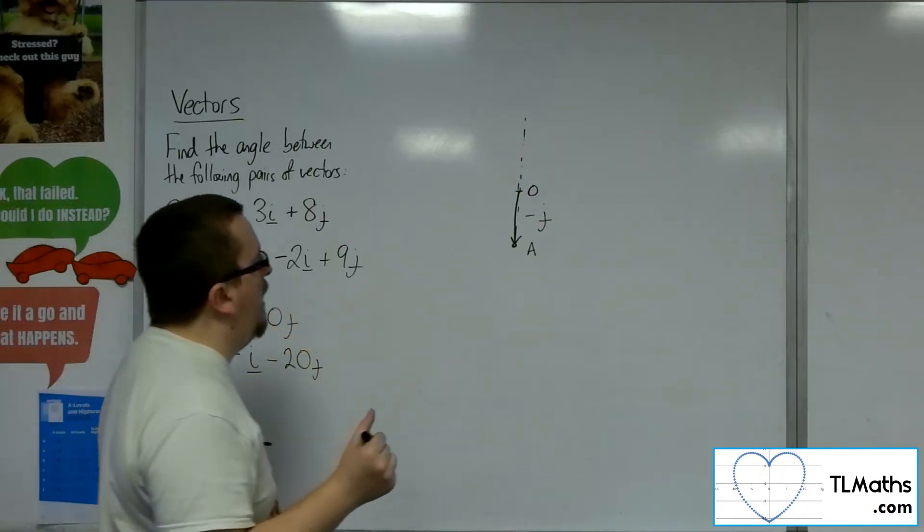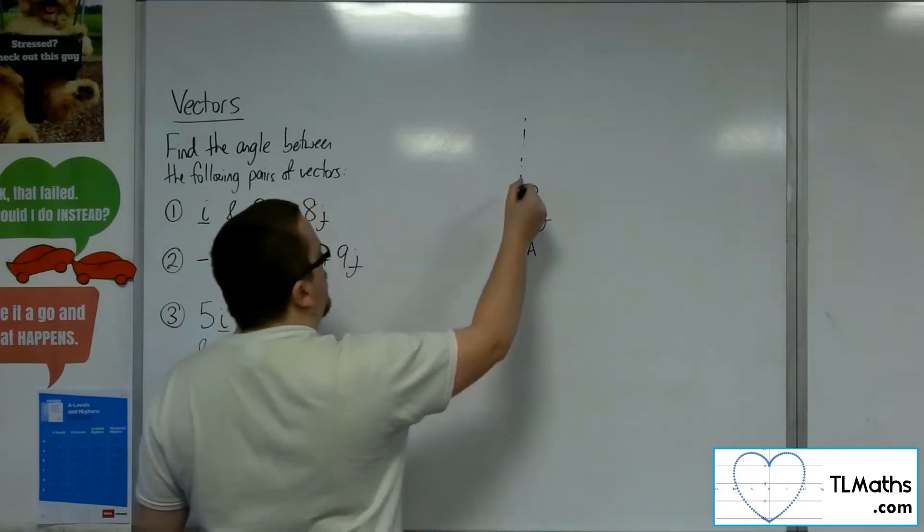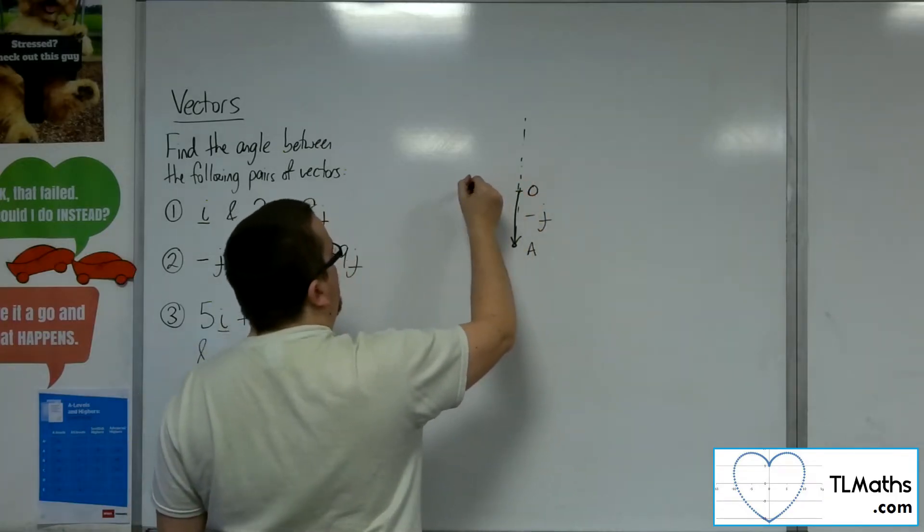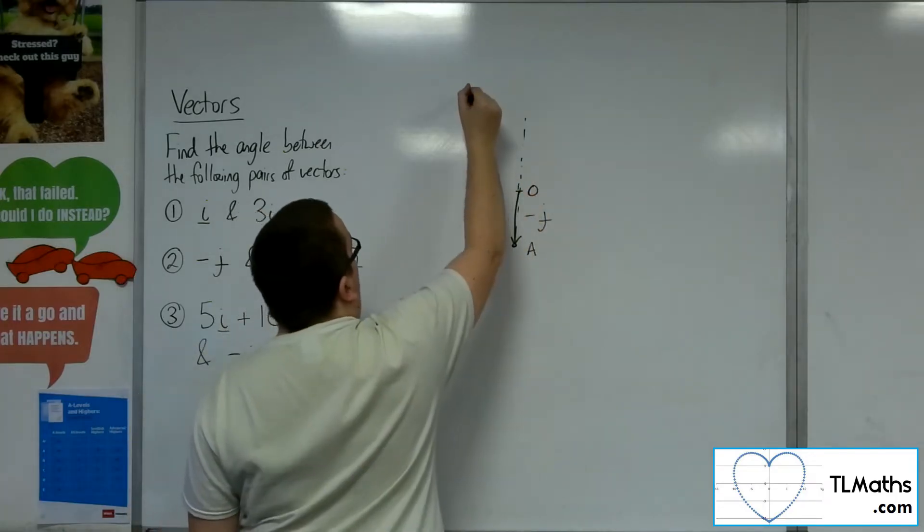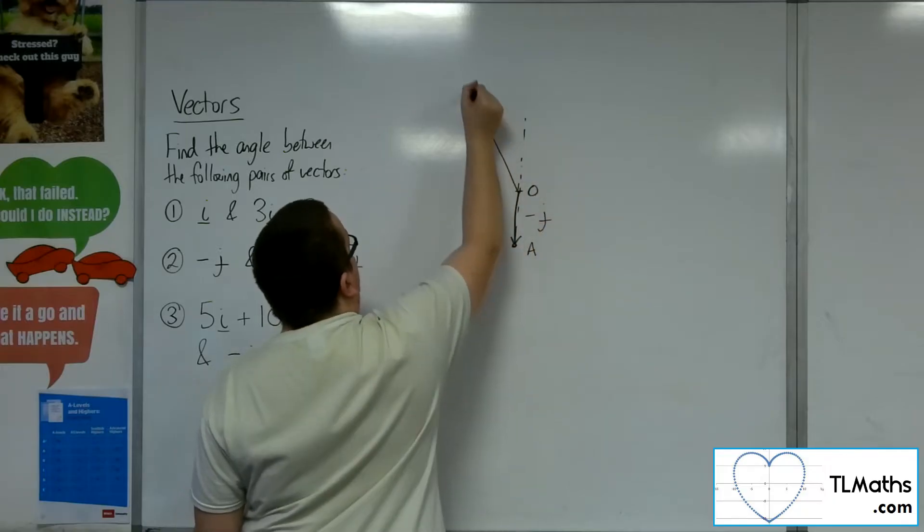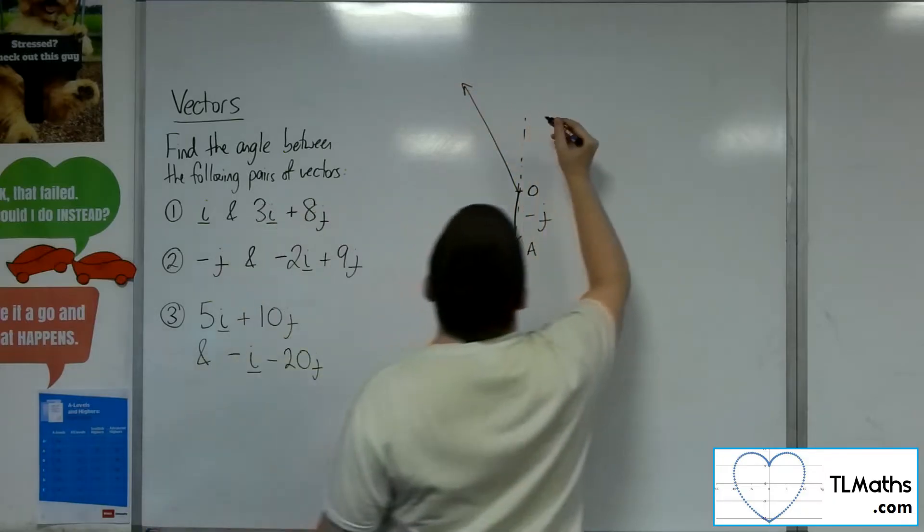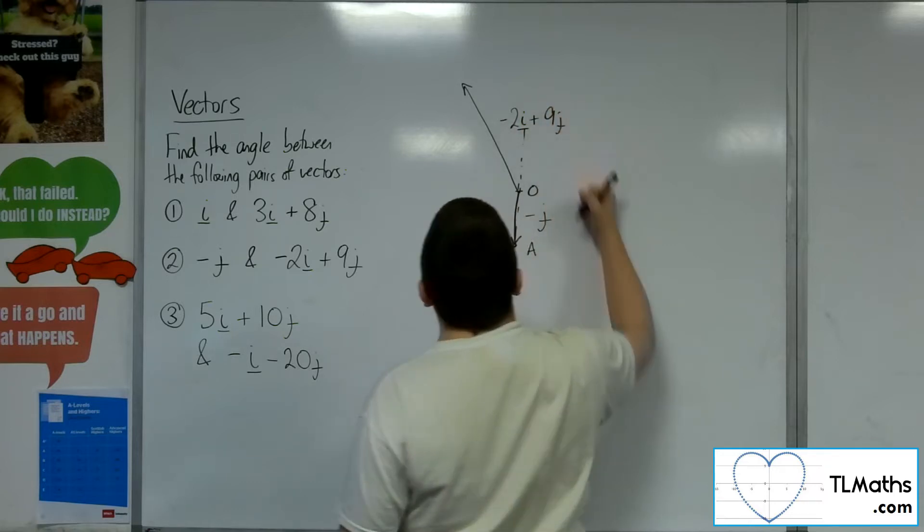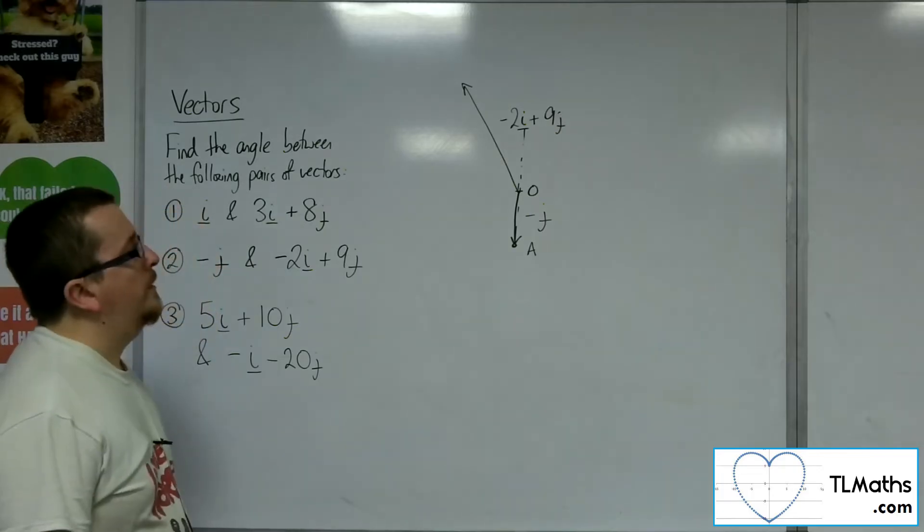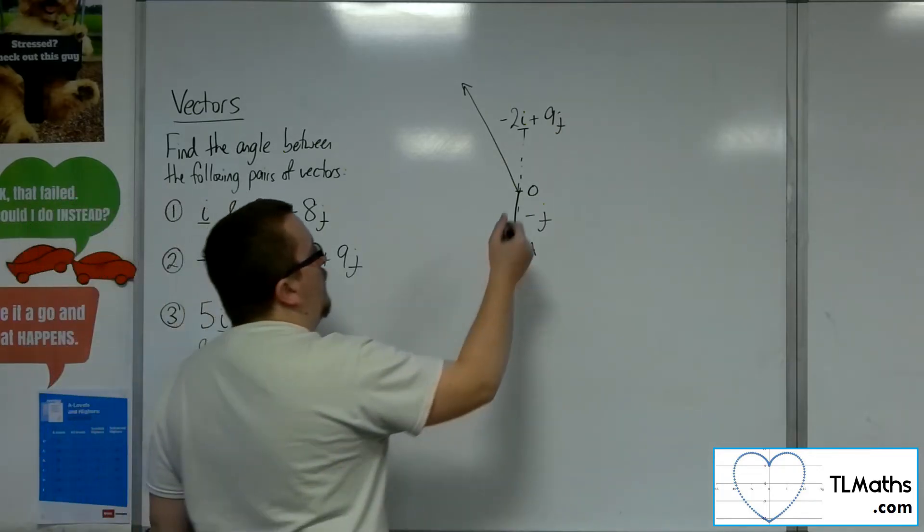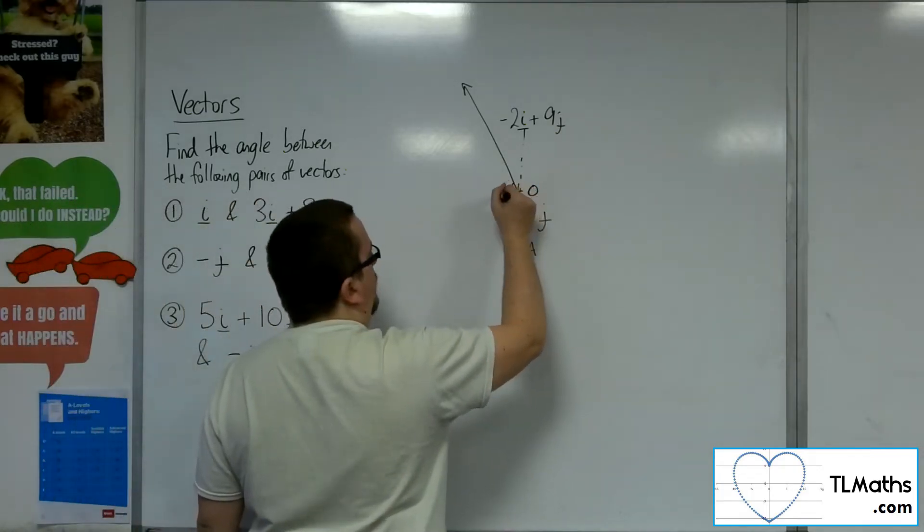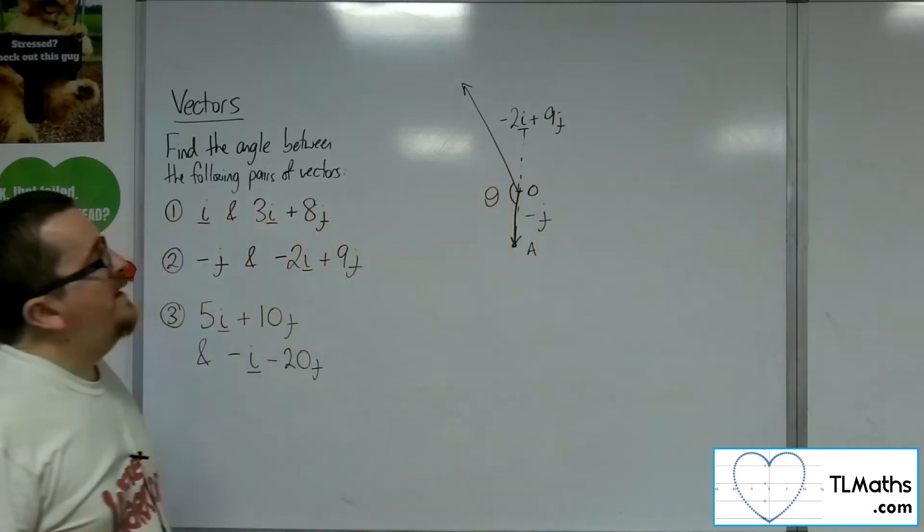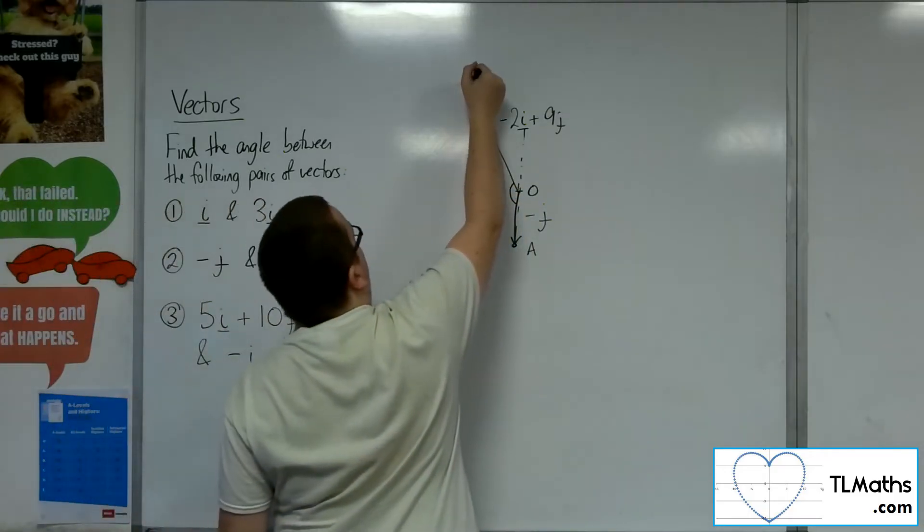Minus 2i plus 9j is going two steps to the left and then nine up. So it's a vector that looks something like that. So minus 2i plus 9j. So what I want is that angle there. Now once again, let's say that's point B.